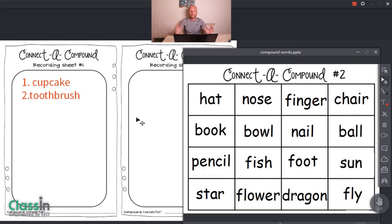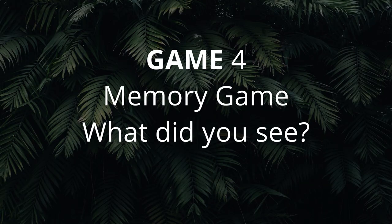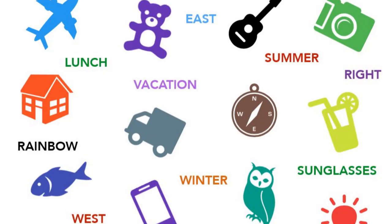You can allow the students to play individually or in teams, so whoever gets the most words is the winner. Game number four is a memory game. You show them something like this on your screen and give them 10 or 20 seconds. They write down or tell you what they can remember, and you can give bonus points if they remember the color of the picture and the word.